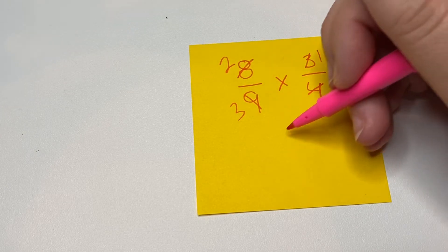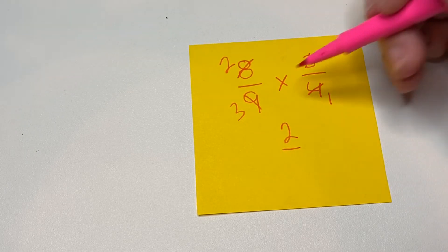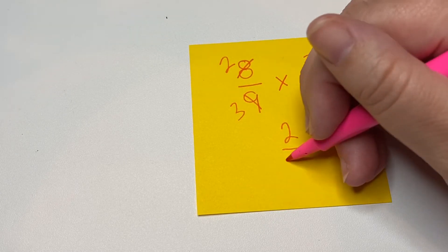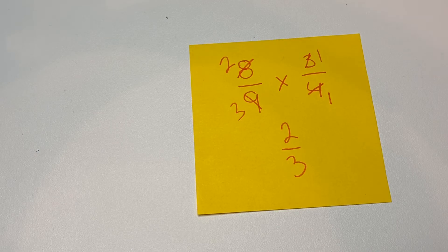Now, so two times one is two, and two times one is two, and three times one is three. Okay. Let's look at another example.